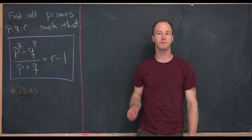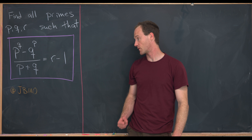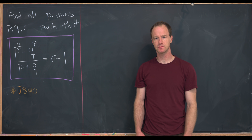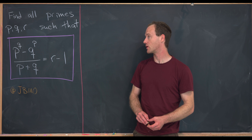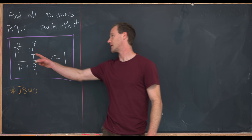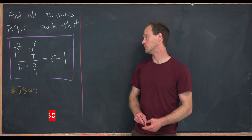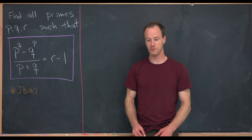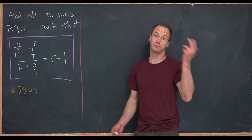I've got a nice problem involving prime numbers to show you guys today. This is from a viewer and also from the Junior Baltic Math Olympiad. We want to find all primes P, Q, and R satisfying the following equation: P to the Q minus Q to the P, over P plus Q, equals R minus 1. This is a slight rewording of what actually showed up on the test, but it's an equivalent problem.